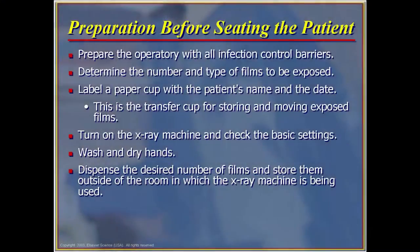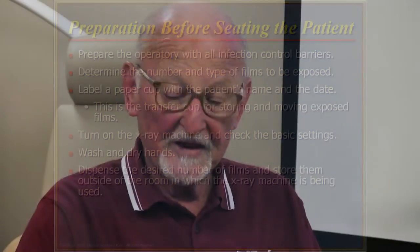Preparation before seeing the patient: prepare the operatory with all infection control barriers. Label a paper cup with the patient's name and date if you're using film, because a frequent mistake is failing to label x-ray film, making it very difficult to identify later. Labeling is always a critical issue when using film.